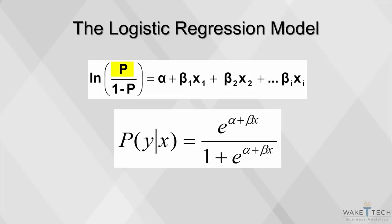p stands for the probability of the outcome, while 1-p stands for the probability of not getting an outcome. However, having log of p over 1-p on the y-axis is not very helpful. We have to compute the actual odds. To do that, we have to use the exponential functions.